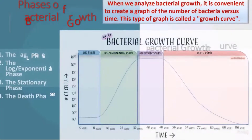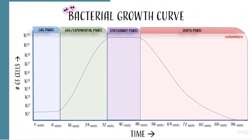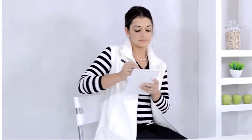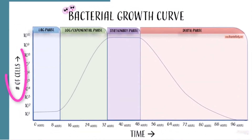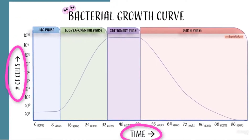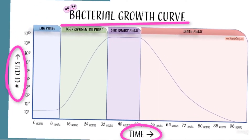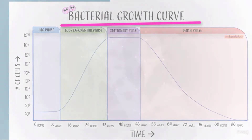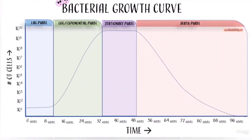Phases of Bacterial Growth with Scientist Cindy. How do we analyze bacterial growth? It is convenient to create a graph of the number of bacterial cells in our cell culture versus time. This type of graph is called a growth curve. Here is just an example of one possible growth curve.